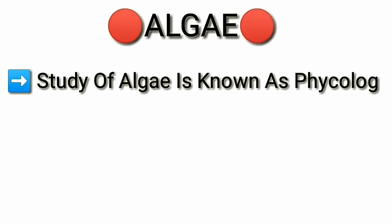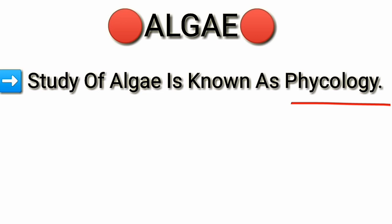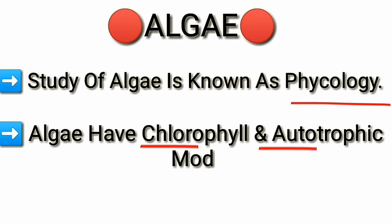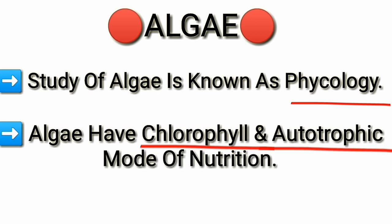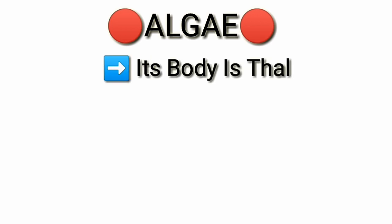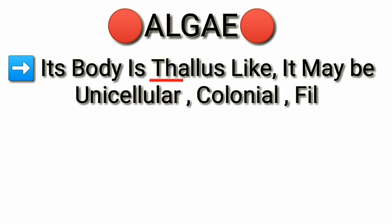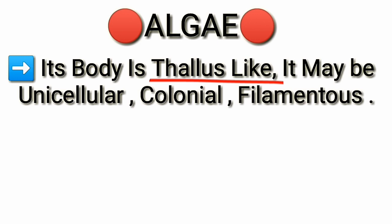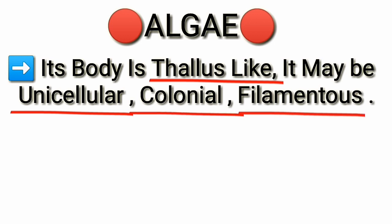The first group is algae. The study of algae is known as phycology. Algae have chlorophyll and an autotrophic mode of nutrition, meaning they prepare their own food. Algae store their food in starch form. The body of algae is like a thallus structure, for example unicellular, colonial, and filamentous.